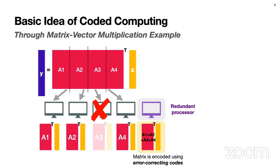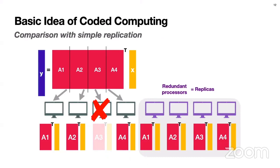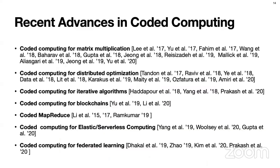Let's consider a scenario where node 3 fails in the middle of computation. Then we have Y1, Y2, and Y4 from the surviving nodes. The output of the redundant processor is Y1 plus Y2 plus Y3 plus Y4. So by subtracting Y1, Y2, and Y4 from this output, we can recover the lost output Y3, giving us the entire Y. If we were to achieve the same resilience using replication, we would need at least four redundant processors, since we don't know which one will fail. Using error-correcting codes can significantly reduce the number of redundant nodes required.